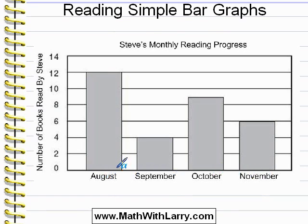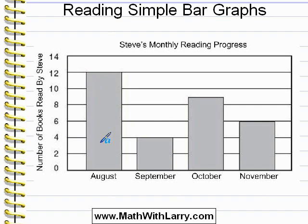Let's take a look at the first bar. It goes up to this line, and looking to the left, we can see that in August he read twelve books. In September, we can see that he read four books. Now in October, the bar goes halfway between the eight line and the ten line, so it's pretty easy to deduce that what it represents is nine — he read nine books in October. In November, the bar goes up to the number six line, so he read six books.